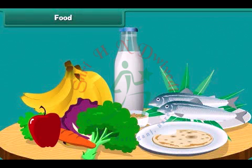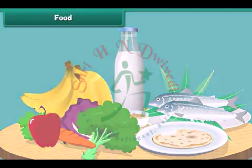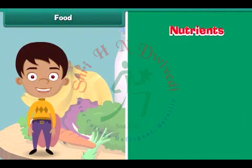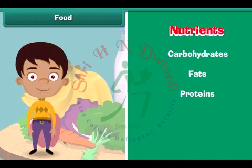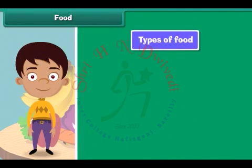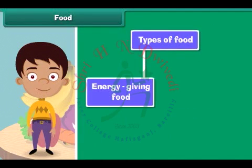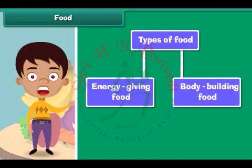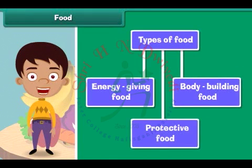We eat a lot of variety of food. Food is made up of nutrients like carbohydrates, fats, proteins, vitamins and minerals. The human body requires three types of food: energy giving food, body building food and protective food.